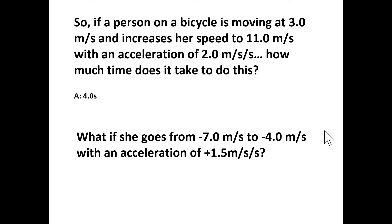What if she goes from negative 7 meters per second to negative 4 meters per second with an acceleration of positive 1.5 meters per second every second? The velocity is negative, meaning she was moving to the left. The initial velocity is negative 7 m/s, the final velocity is negative 4 m/s — she is slowing down. After one second she would have a velocity of negative 5.5 m/s, and after two seconds negative 4 m/s. So it takes 2 seconds.